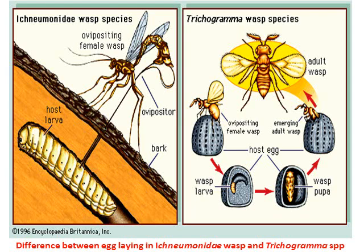This shows the egg-laying position of the Ichneumon wasp. The Ichneumon wasp has a longer ovipositor, like a needle-like structure, and can lay eggs inside the stem against host larvae like wood borers or stem borers. In the case of Trichogramma, having a very short ovipositor, it is only possible to lay eggs by setting down on the host egg with the help of the ovipositor. This is some difference between the same order of Ichneumon and Trichogramma species.